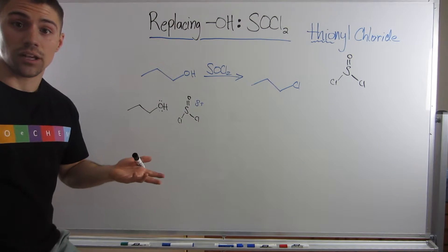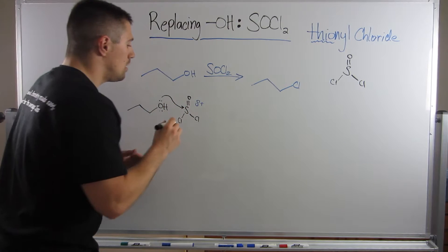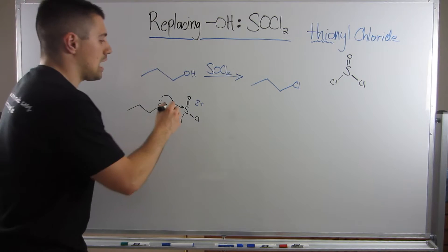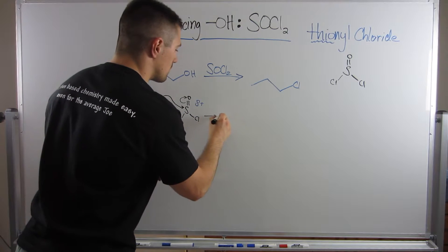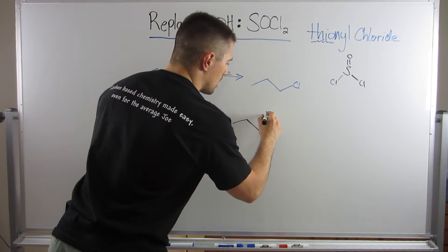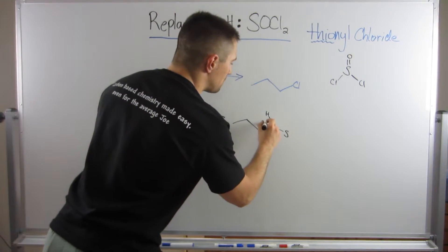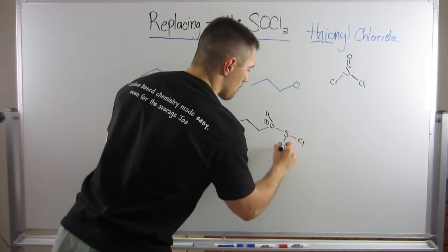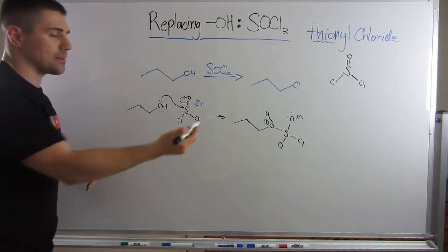And it itself has a delta minus, so it is going to help itself by attacking that sulfur. So at the same time, right, some bond's going to leave, and it's going to be the bond to this oxygen right there. So we've got oxygen, he just donated an electron pair and bonded to sulfur, so he has a positive charge. We have the two chlorines, and now we have this O minus, right, because this oxygen just accepted an electron pair.